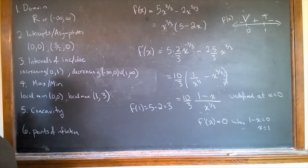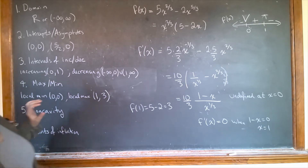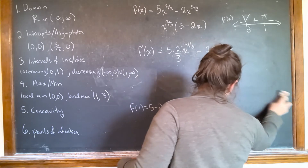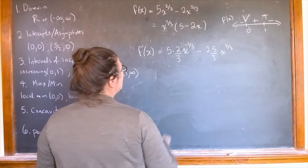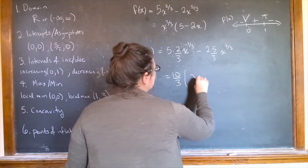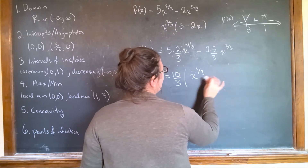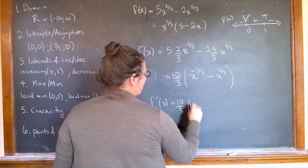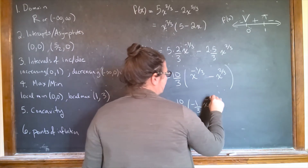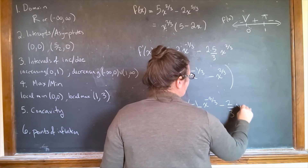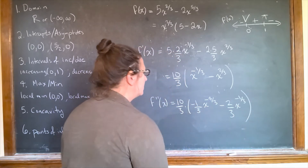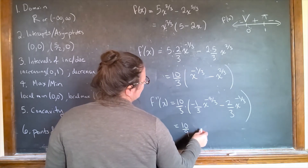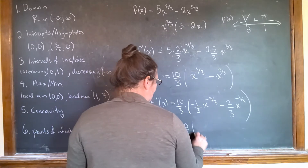For concavity I need the second derivative. Starting from f'(x) = (10/3)x^(-1/3) - (10/3)x^(2/3), the second derivative is (10/3)(-1/3)x^(-4/3) minus (10/3)(2/3)x^(-1/3), giving f''(x) = (-10/9)x^(-4/3) - (20/9)x^(-1/3).